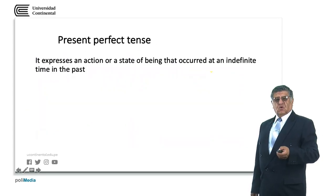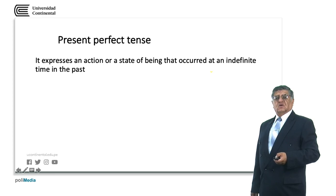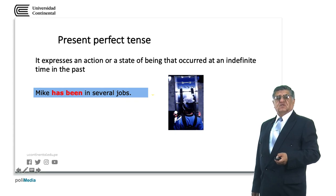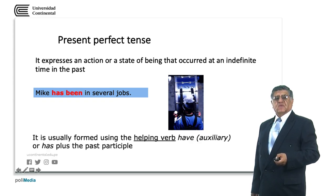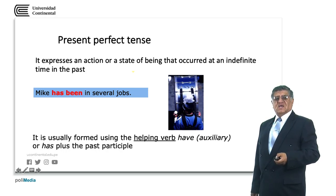The present perfect will show an action that started or happened from a determined time in the past, or at an indefinite time in the past. For example: my has been in several jobs — we don't give the exact time, but it expresses that it started in the past and continues in the present. The helping verb have is used with I, you, we, they; and has is used in the third person singular.